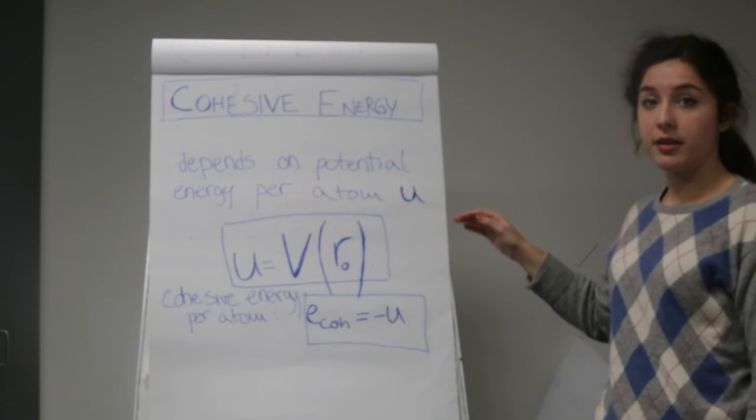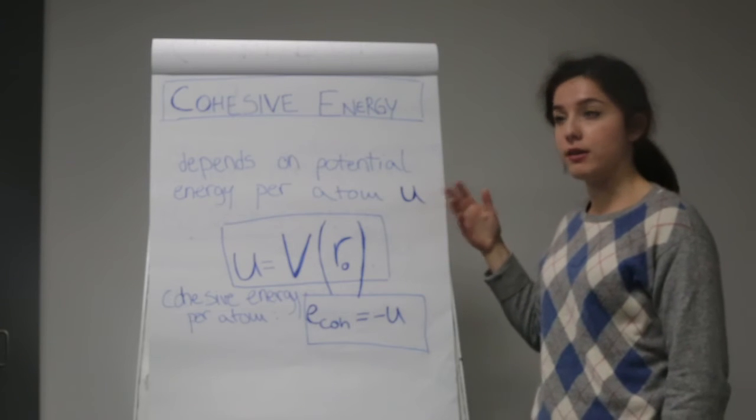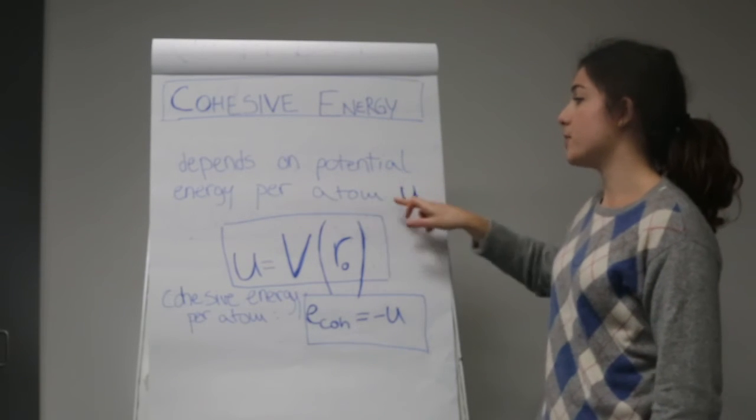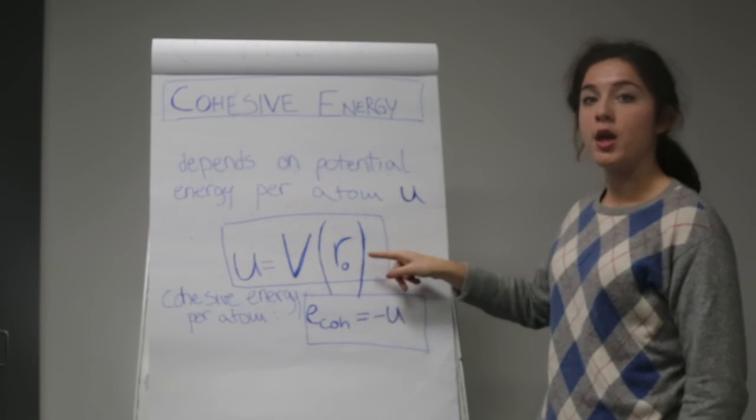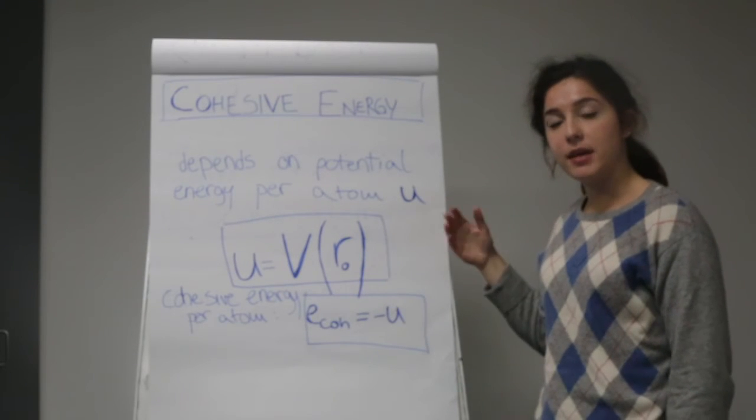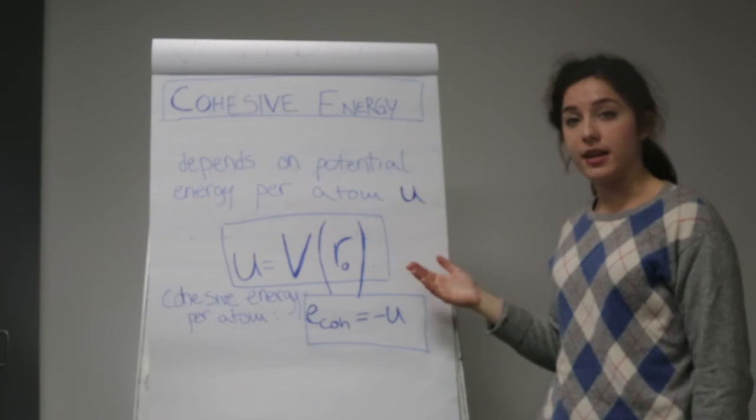To calculate it, we need to think about each individual particle within the material. So we think about the potential energy per atom, U. U is a function of R0, where R0 is the minimum distance between two atoms in the material, so it's the equilibrium distance.